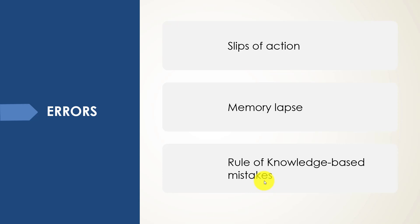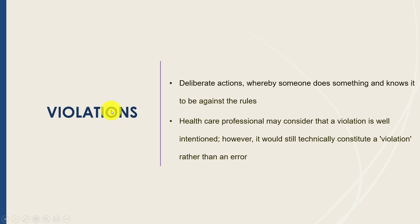It is very important to differentiate slips, lapses, and mistakes from violations. Violations are not considered errors — they are deliberate actions where someone does something knowing it's against the rules, even if they have good intentions. For example, when paged to address another issue, a clinician cuts corners on the physical exam and misses a diagnosis, or treats a patient with a medication without reviewing their medication list and allergies, resulting in a drug-drug reaction. These involve deliberate deviation from protocol, best practice, or standard of care.